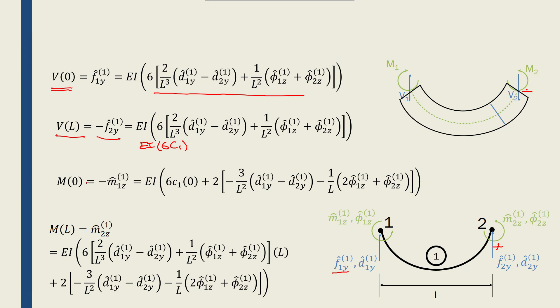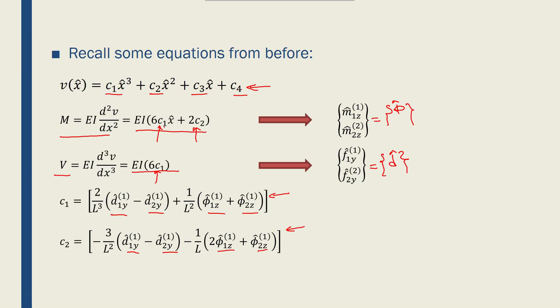Now we have to apply the moments as well. So if I go back, the moment is a little bit more complicated. It has 6c1x plus 2c2. If I put x equals 0, this one will be cancelled out. I only have 2c2.